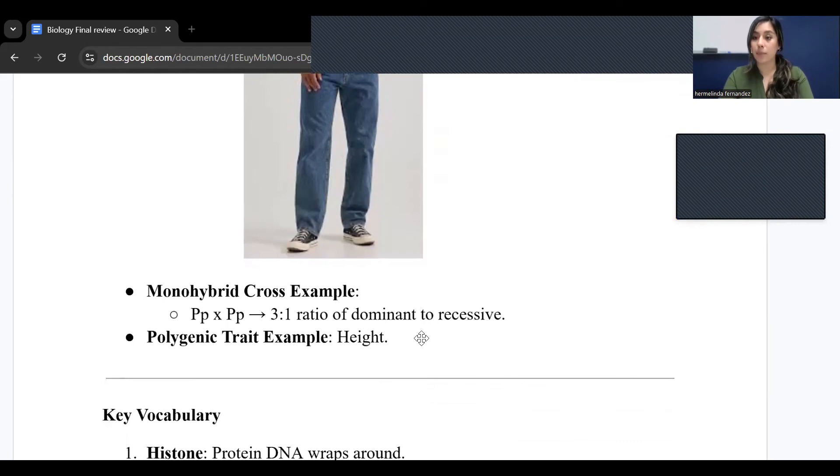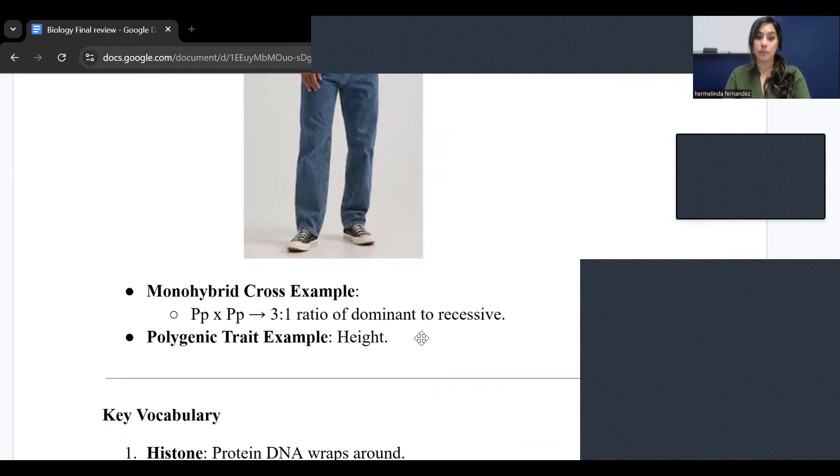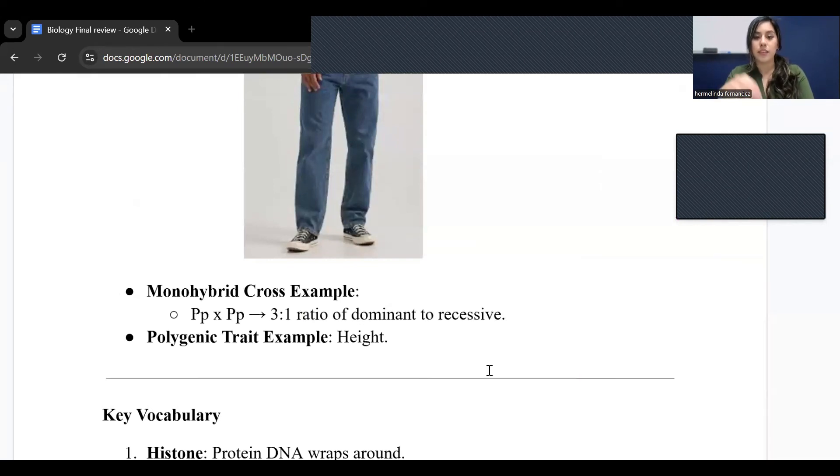Monohybrid cross example would be capital P, lowercase p, or dominant P, recessive p. That would be a ratio of 3 over 1. That would be that ratio - it would be a dominant to recessive because 3 is bigger than 1. A polygenic trait example would be height.